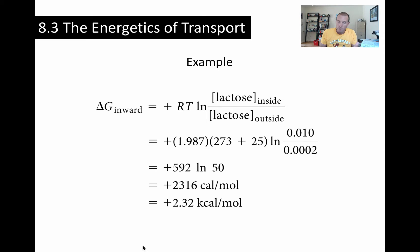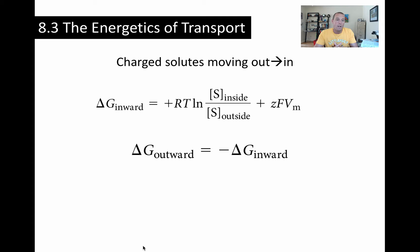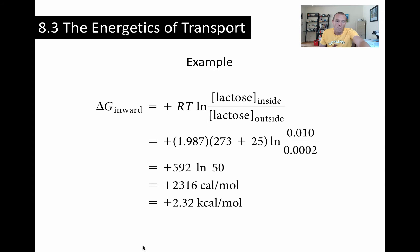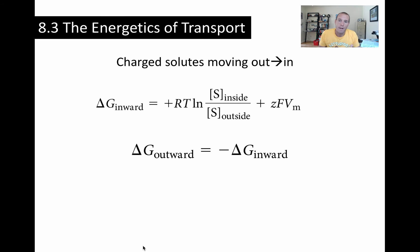Obviously, if we reverse the situation and talk about the outward movement of lactose — letting lactose move out of the cell — delta G is going to be negative. It's just −2.32 kilocalories per mole; all that changes is the sign when we swap the inside and outside concentrations.